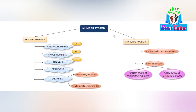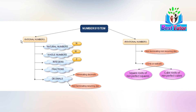Welcome to Best Tutor. This is a mind map which is going to explain about the number system and the sets that it contains. The number system contains two types of sets of numbers: rational numbers and irrational numbers. The basic definition of rational numbers is that every number which is in the form of p by q, where p and q are integers and q is not equal to 0, is called a rational number.